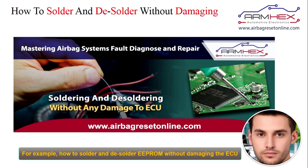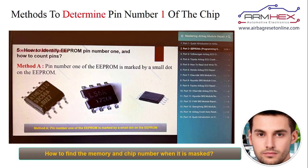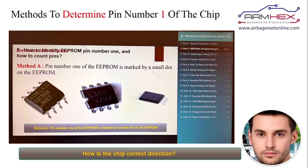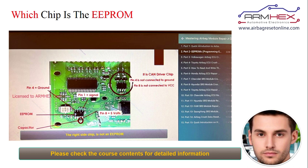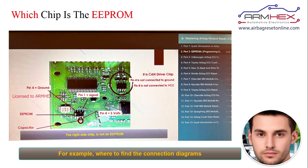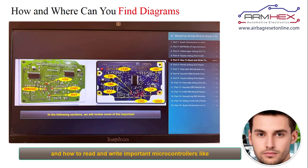For example, how to solder and desolder EPROM without damaging the ECU, how to find the memory and chip number when it is masked, and how to identify the chip's correct direction. Next, we have 10 important and practical examples. For example, where to find the connection diagrams and how to read and write important microcontrollers like Infineon, SPC, and Renesas.